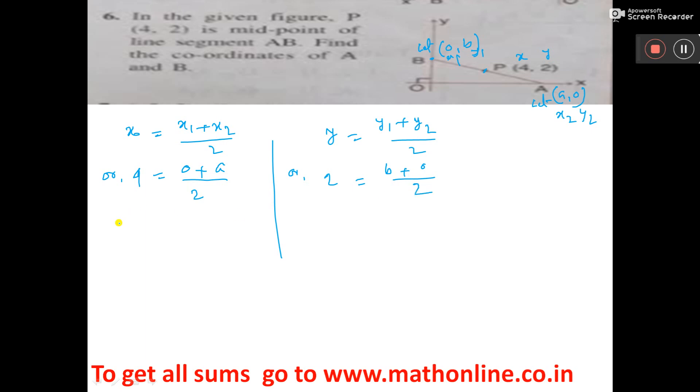Now do cross multiplication, then A is equal to 4 times 2, which is 8. So B is equal to 2 times 2, which is 4. So coordinate of A, I consider A, 0. So A, 0 means 8, 0 and B, I consider 0, B. So 0 comma value of B is 4. This is the answer.